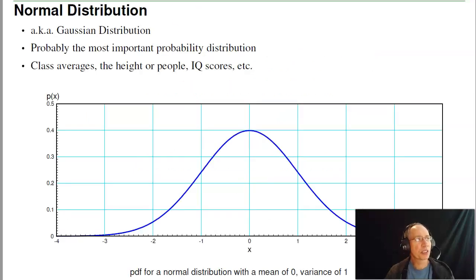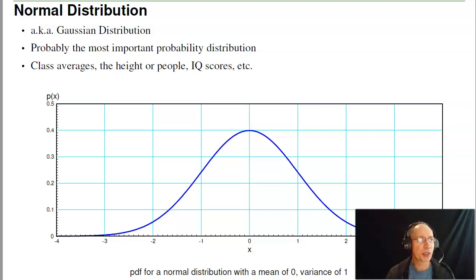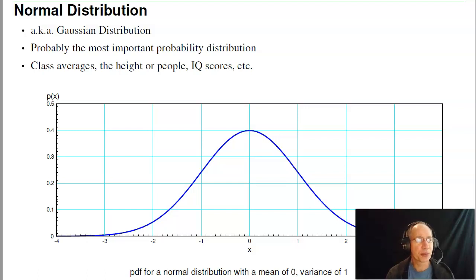The normal distribution, also known as the Gaussian distribution, is probably the most important probability distribution. Almost everything fits a normal distribution — class averages, height of people, IQ scores, and so on are all normally distributed. What a normal distribution looks like is the bell-shaped curve you're probably very familiar with.